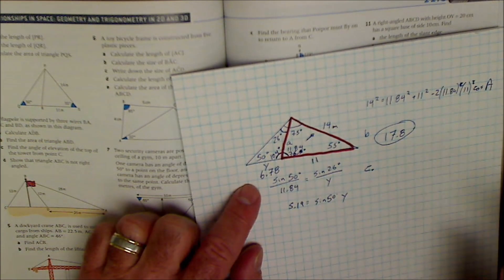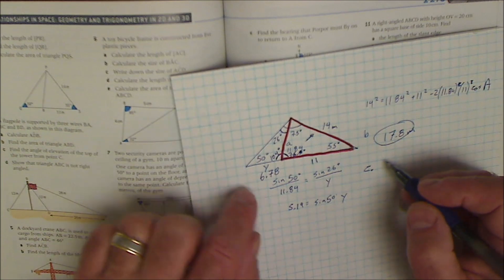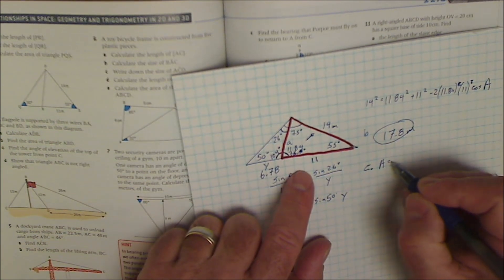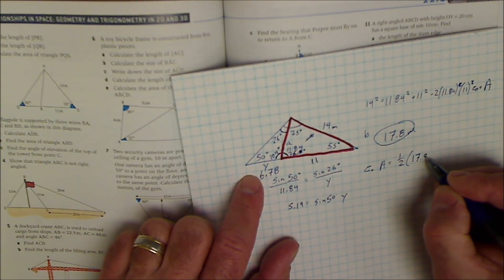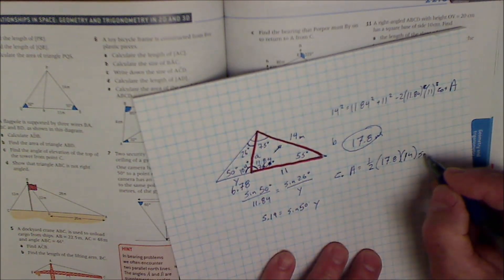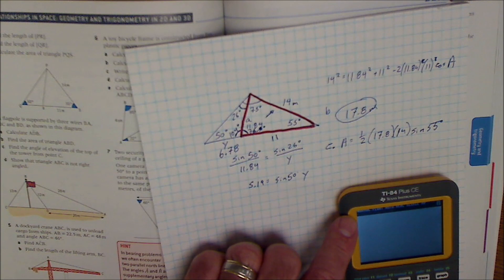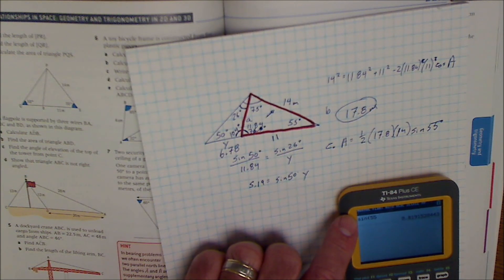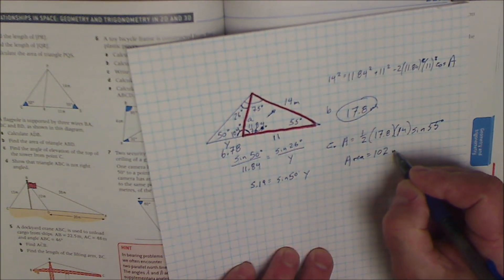That's part b. Part c is the area. This is meters. Part c is find the area. The area is going to equal one half, this length 17.8, times that length 14, times the sine of 55 degrees. So sine of 55 times 14 times 17.8 times 0.5 gives me an area of 102 square meters.